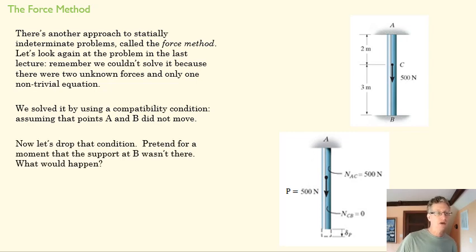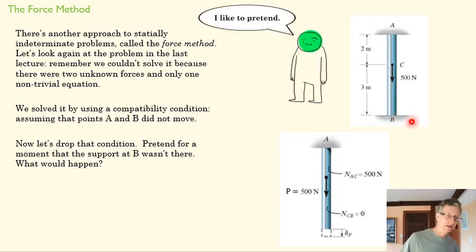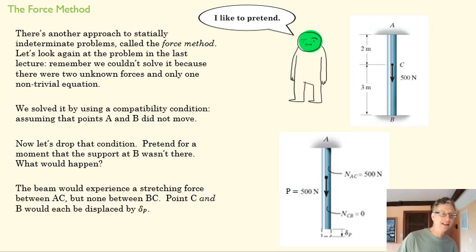We're going to drop the compatibility equation. Instead, we're going to pretend for a moment that B isn't there. And pretending is fun, right? So we'll have a good time here. What's going to happen if B isn't there? Well, that beam would stretch. We'd see some deformation between A and B here, or A and C, I guess, here. But none between B and C, okay? And so we'd see a displacement at B that was the same as the delta of A and C.